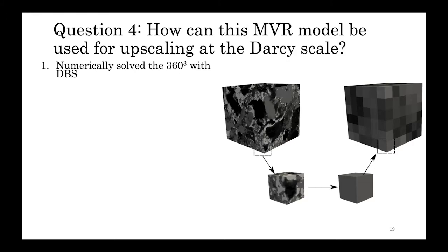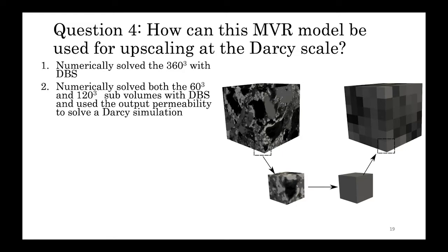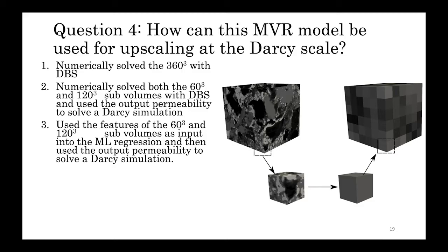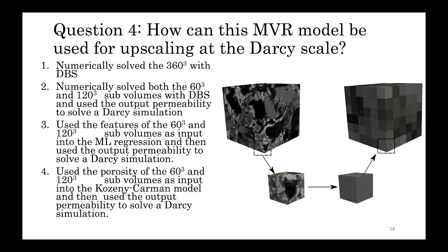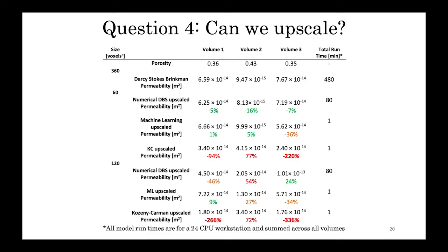We then ran each 360-cube volume through four different models. In model one, we numerically solved the 360-cube volume with Darcy Stokes-Brinkman. In model two, we numerically solved both the 120-cubed sub-volumes and the 60-cube sub-volumes with Darcy Stokes-Brinkman and used the output permeability to solve a Darcy simulation. In model three, we used the features of the 60-cubed and 120-cube sub-volumes as input into the machine learning regression and then used the output permeability to solve a Darcy simulation. And finally, in model four, we used the porosity of the sub-volumes as input into a Kozeny-Karman model and then used the output permeability to solve a Darcy simulation.